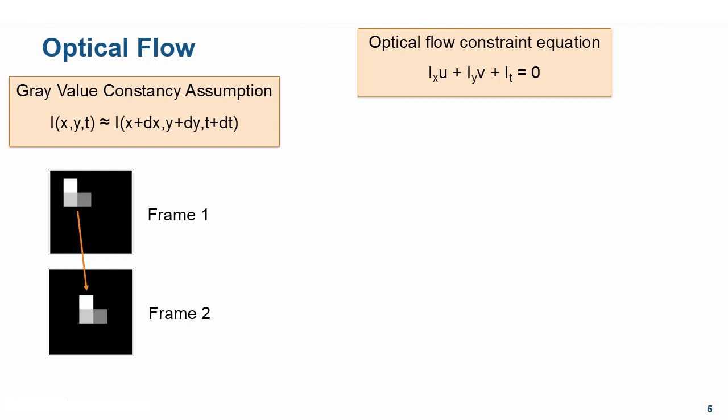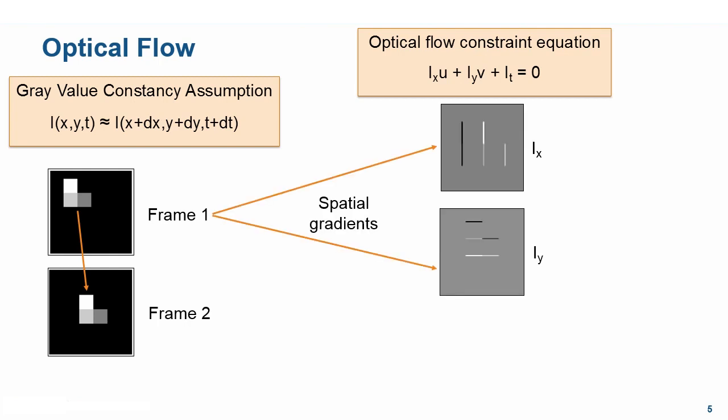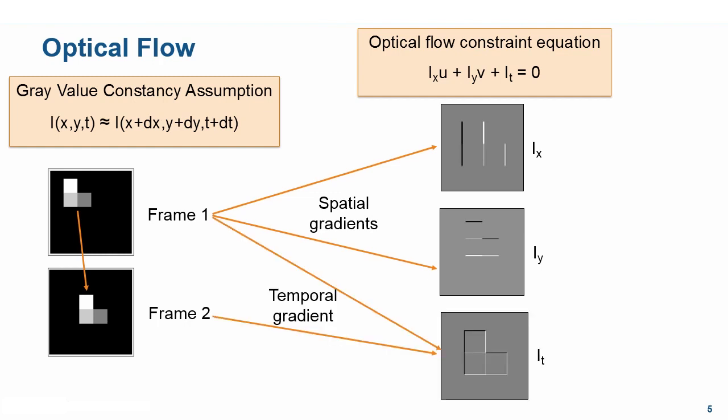Image gradients are used to compute the directional change in intensity or color. Ix and Iy are spatial brightness gradients of frame 1: Ix shows the vertical edges, and Iy shows the horizontal edges. It is the temporal brightness derivative between frames 1 and 2. Both spatial and temporal gradients are obtained using different types of image filters, which vary with each optical flow method. U and V in the equation are the flow vectors we are ultimately interested in — applying the flow vectors to the spatial gradients will be cancelled by the temporal gradient.